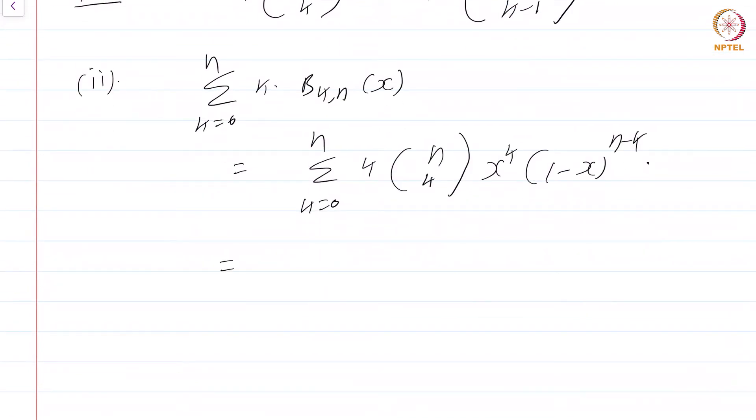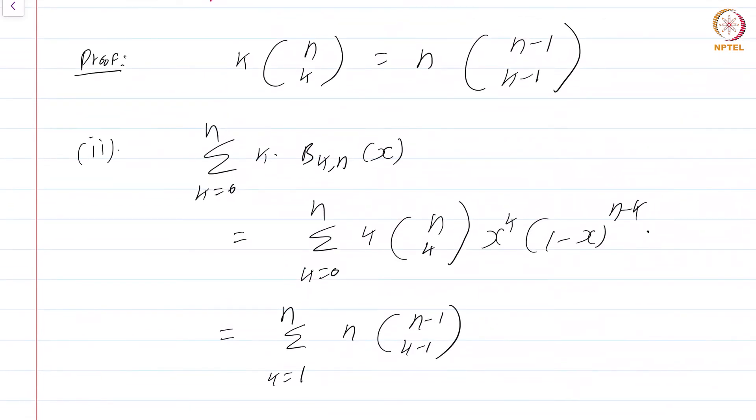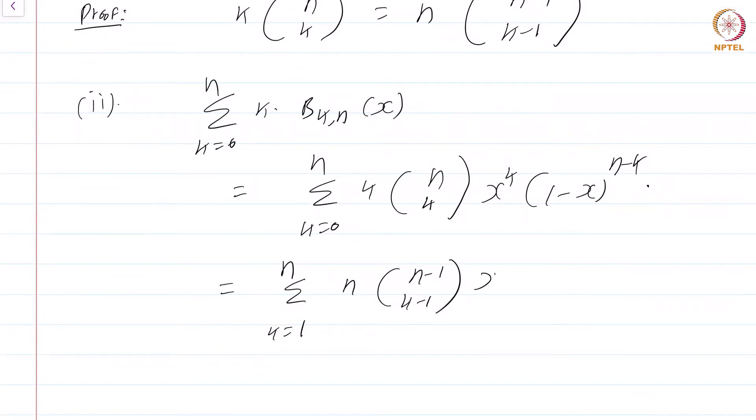This is nothing but summation k equals 1 to n, n times n minus 1 choose k minus 1. Note I have used the identity that k times n choose k is n times n minus 1 choose k minus 1, times x power k times 1 minus x power n minus k.